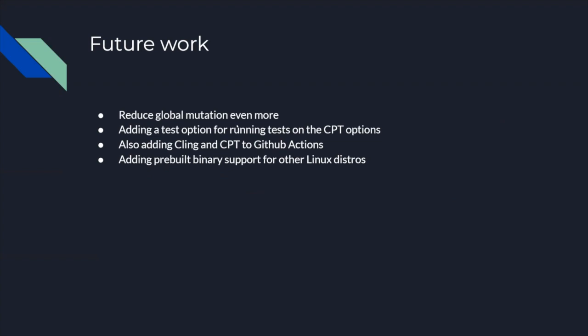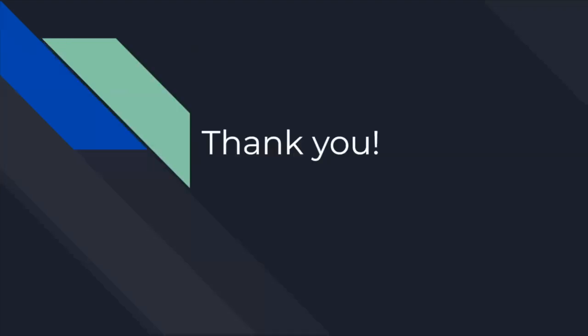Future work for this project would definitely include reducing global mutation even more, which would be a huge rewrite and probably a pretty big project in itself. I'm also adding a test option for running tests on the CPT options, adding Cling and CPT to GitHub Actions, and adding pre-built binary support for other Linux distros such as OpenSUSE. Thank you.